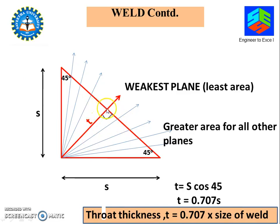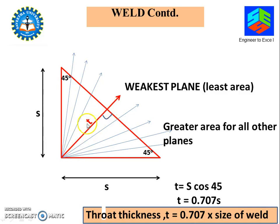The concept behind why we take this throat thickness is that I can draw a number of planes from this point to this point. But this t — from here to here — gives you the least distance; this is the smallest distance. Whenever a load comes or whenever the weld fails, it fails through this plane. So this is the weakest plane, because other planes will give a larger area.